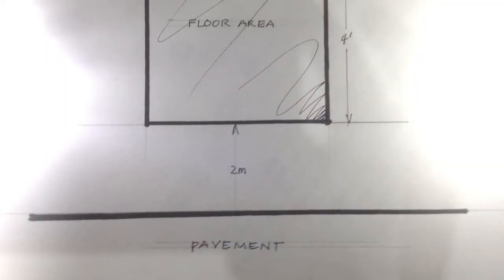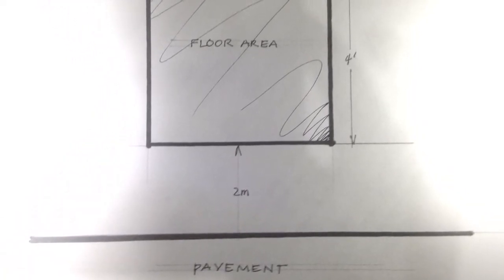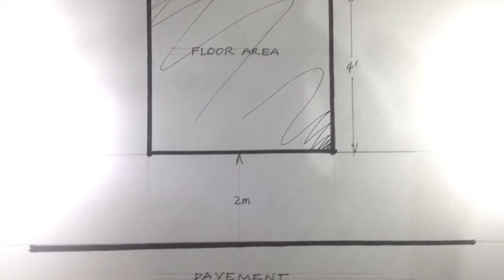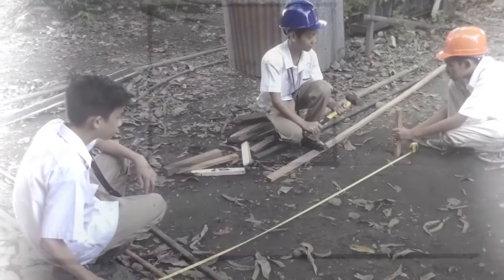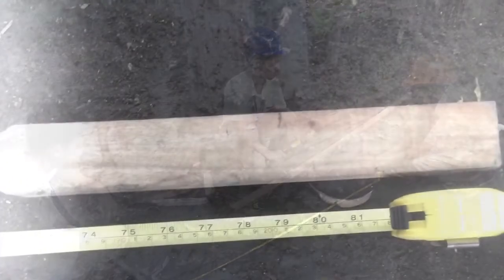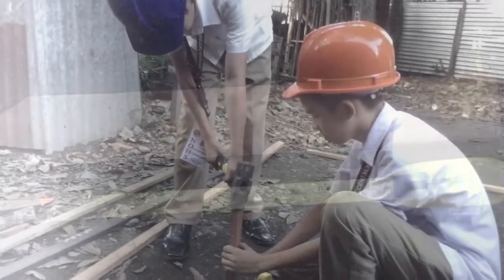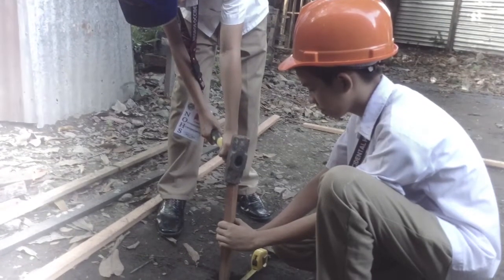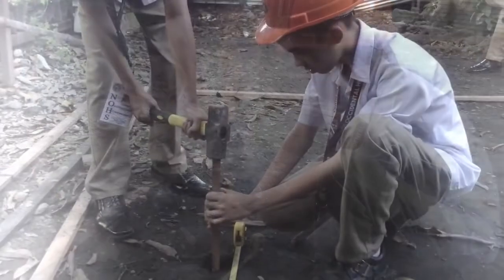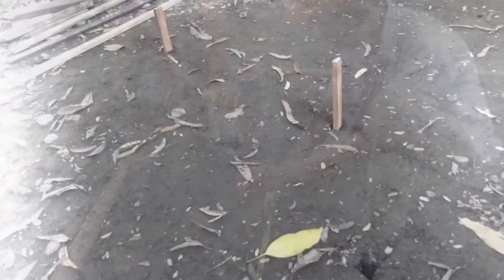Now let's start with step one. Let's say the total floor area is 4 by 4 feet with a 2 meter distance from the pavement. We will be needing the pull push roll to accomplish these preliminary steps. From the pavement, we will extend our pull push roll to 2 meters going to the vacant lot, then drive our first temporary stake. We will do this again using the length of the floor area to establish the orientation line. After establishing the orientation line, we will enclose the floor area using the dimensions given and install the remaining temporary stakes.